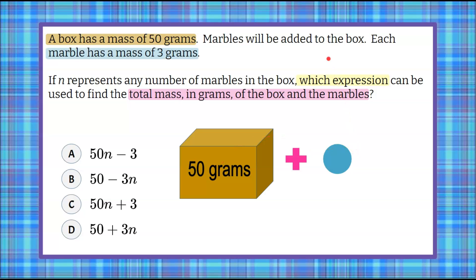We're going to add marbles to the box, and each marble is 3 grams. So we're not just adding one marble to the box. We're adding n marbles to the box. So that means n is representing the number of marbles, but it's an unknown amount. It could change. It could be variable.